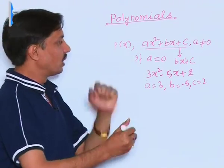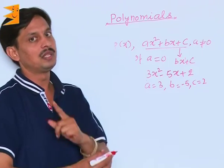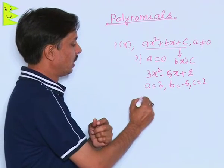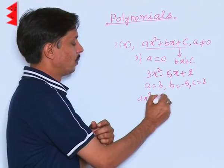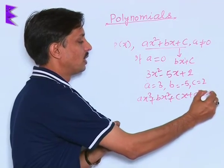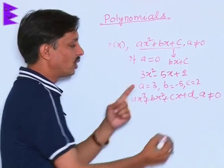As there is a standard form of writing the quadratic polynomial, there is a standard form for writing the cubic polynomial also. It is A x cube plus B x square plus C x plus D, provided A is not equal to 0.